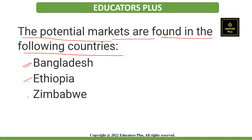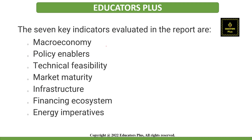The report also talks about potential markets found in countries including Bangladesh, Ethiopia, and Zimbabwe. The seven key indicators evaluated in the report are: macroeconomy, policy enablers, technical feasibility, market maturity, infrastructure, financing of the ecosystem, and energy imperatives.